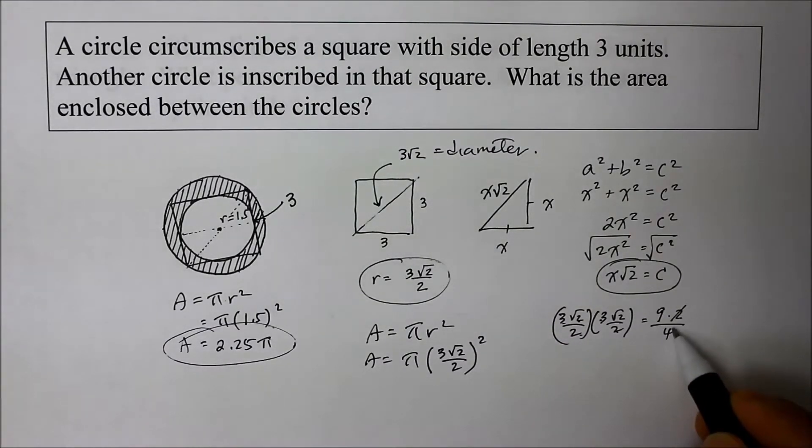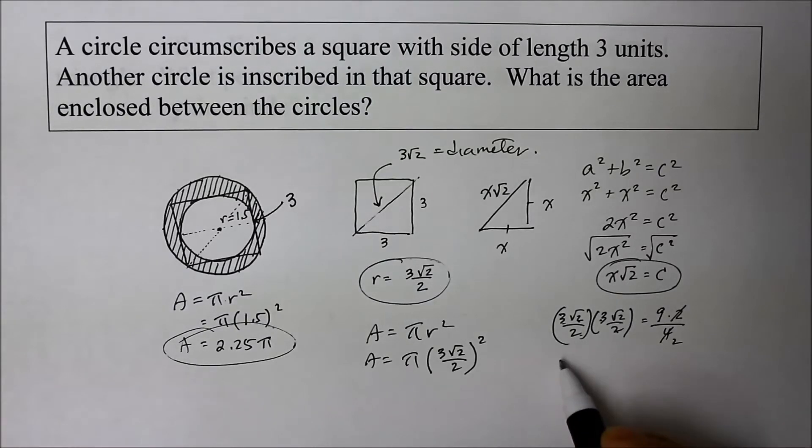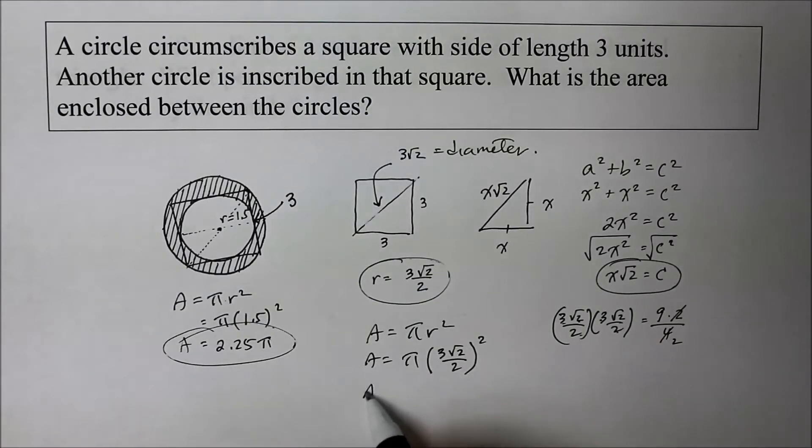Let's simplify. The 2 reduces the denominator by 2. So the area is simply, not quite simply, but simply 9 over 2 pi.